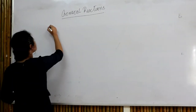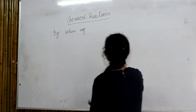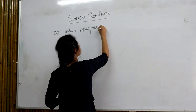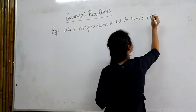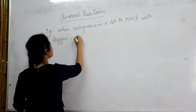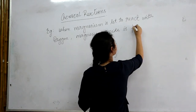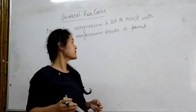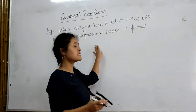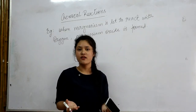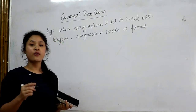Let me give you one example. When magnesium is led to react with oxygen, magnesium oxide is formed. This chemical reaction described in a sentence is quite long, so we have a solution. We can represent this chemical reaction as an equation, and that equation we call a chemical equation.